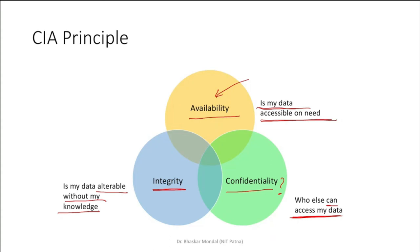There is a need to balance confidentiality, integrity, and availability because they involve trade-offs. Increasing one to the highest level can decrease the others.